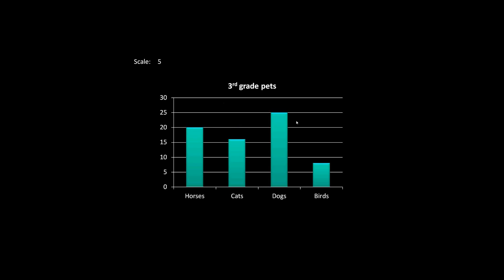For a total, you might have to estimate a little bit — you would add your twenty plus your sixteen plus your twenty-five plus your seven or eight, whatever you would assume, and that would give you the total number of people surveyed. Bar graphs are just a really nice, quick way to show your data and information in a visual representation.